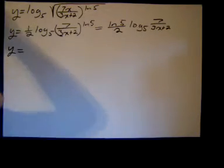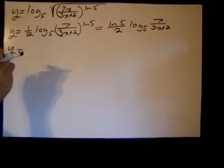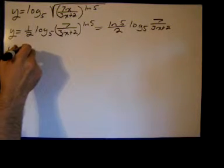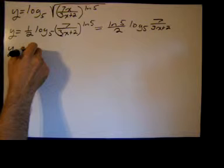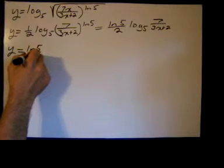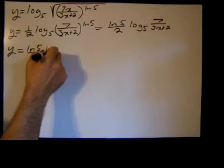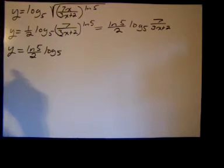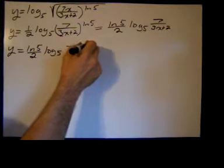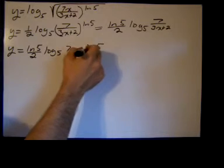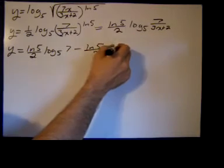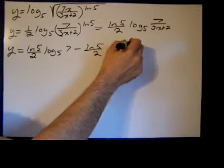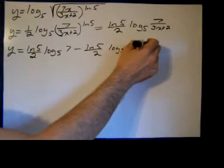And now I could use some more properties to break this up. We have a quotient here so we can break up the difference of the logarithms. So we have the natural log of 5 over 2 times the log base 5 of 7x minus the natural log of 5 over 2 log base 5 of 3x plus 2.